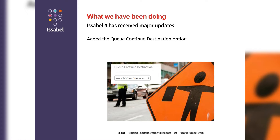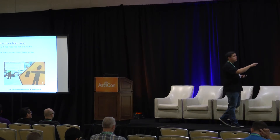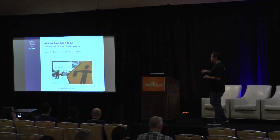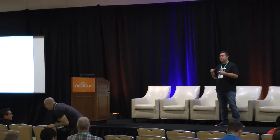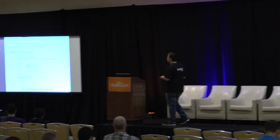We added the queue continue destination option, which lets you — once the call is done on the queue — do something with it. For example, you can send calls in your queue to a survey after the call. With this module, you just set up a custom destination, select it, and when the call is completed on the queue, it will go to the destination you want. We also have a write queue log where you can use custom variables, and like the queue continue, you can decide what to do afterwards — for instance, writing a variable before moving to an overflow queue.